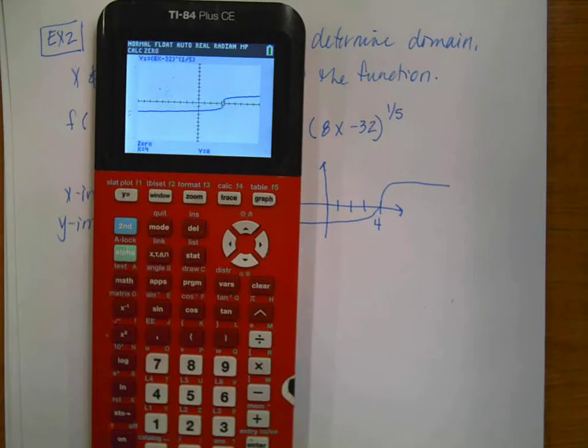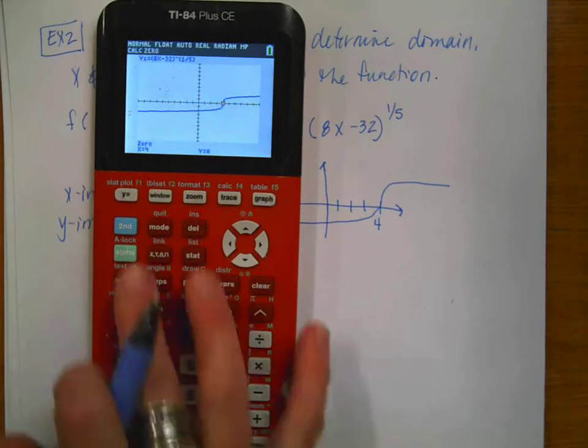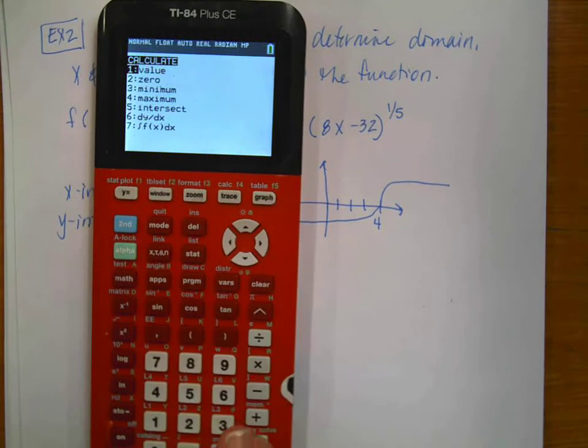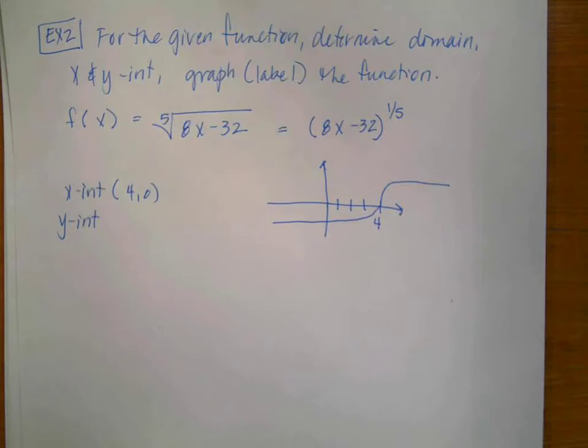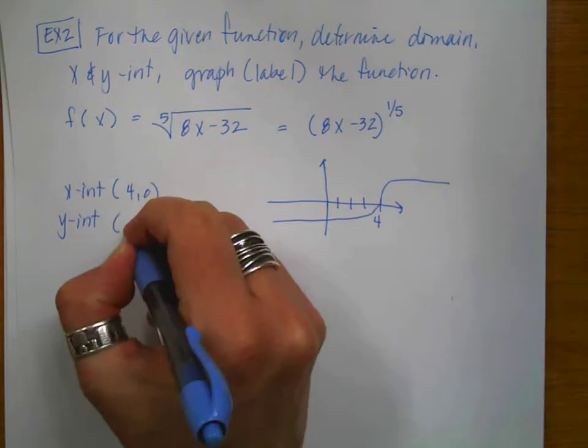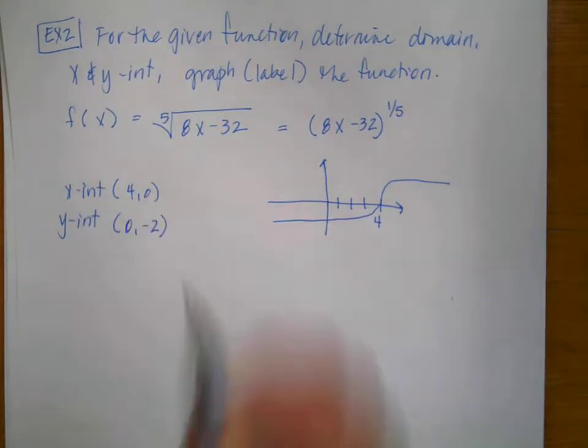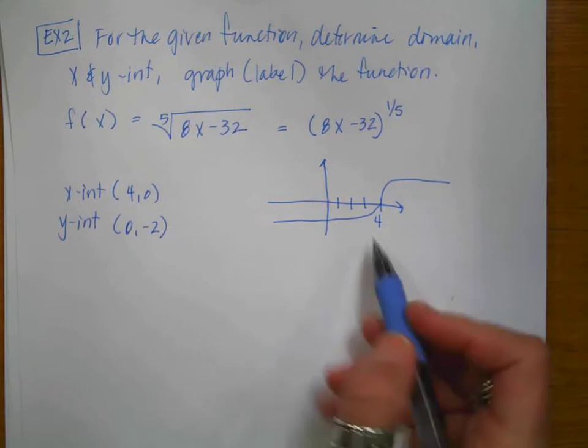Now I need to find the y intercept. And again, I'm going to use my calculator. I'm going to do second, calculate, value. The value is when x is 0. And I get that y is a negative 2. So my y intercept is going to be 0, negative 2.